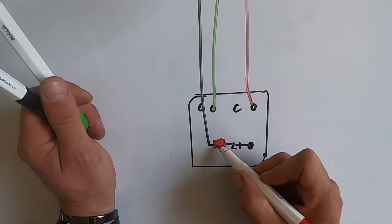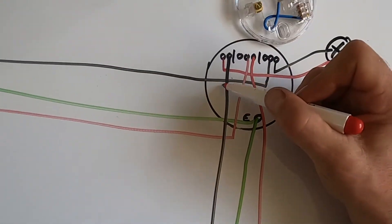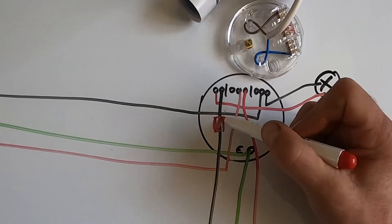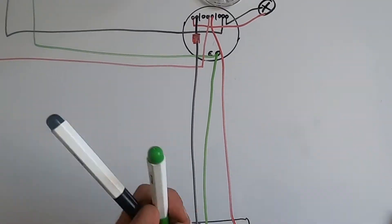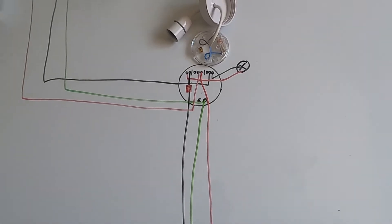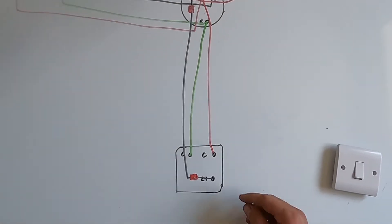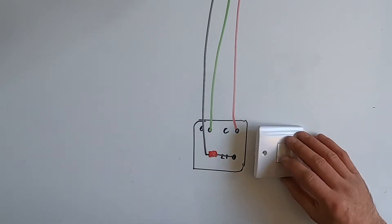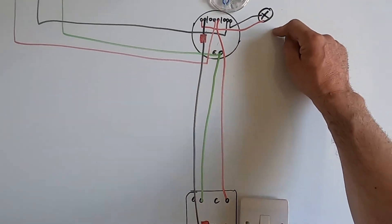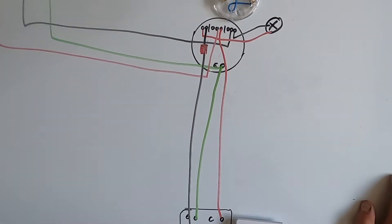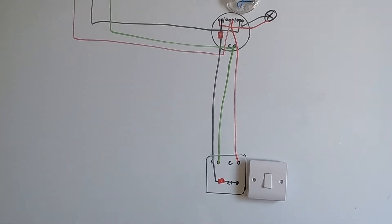In the switch where you terminate it, put sleeving on that cable. So that will be your lighting circuit switch, because then when you switch this on and off, it will switch the lives going to the light and obviously turn the light on and off. And that's how to wire a ceiling rose.